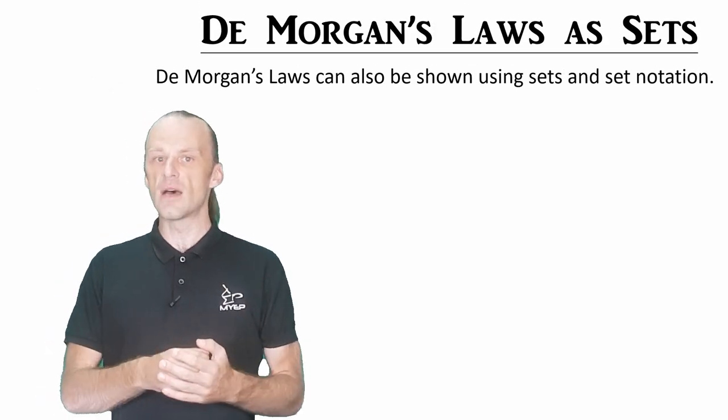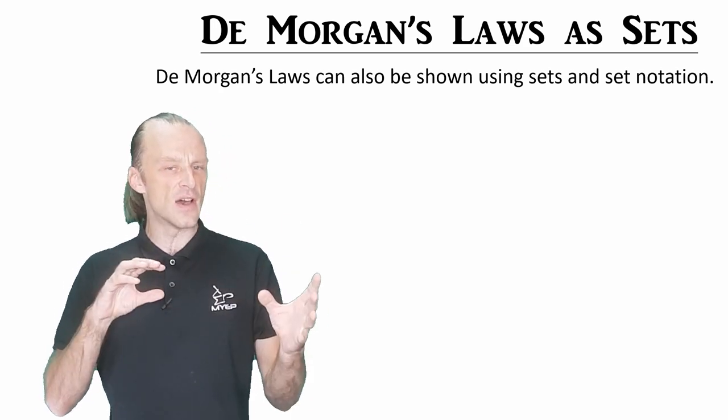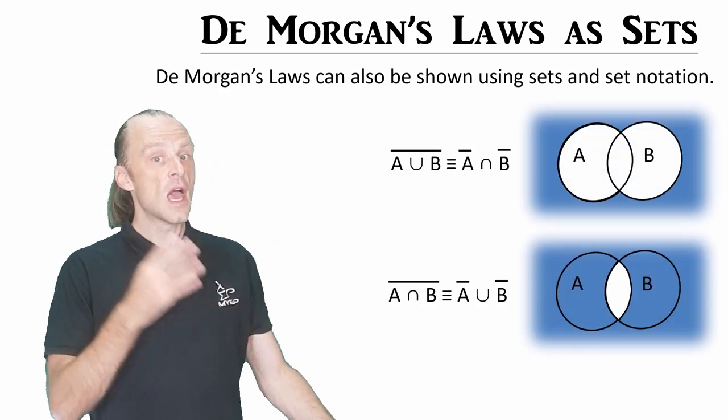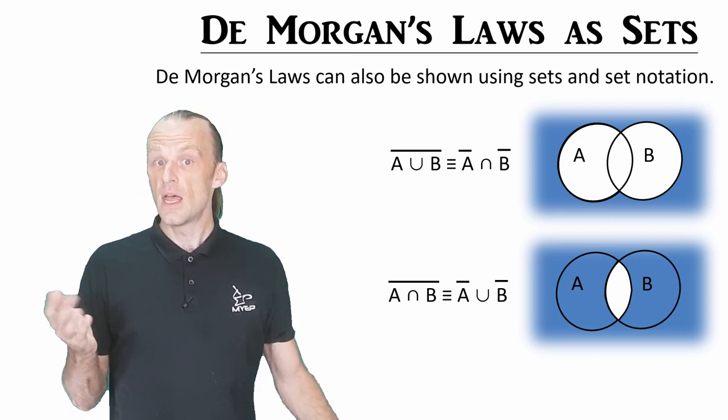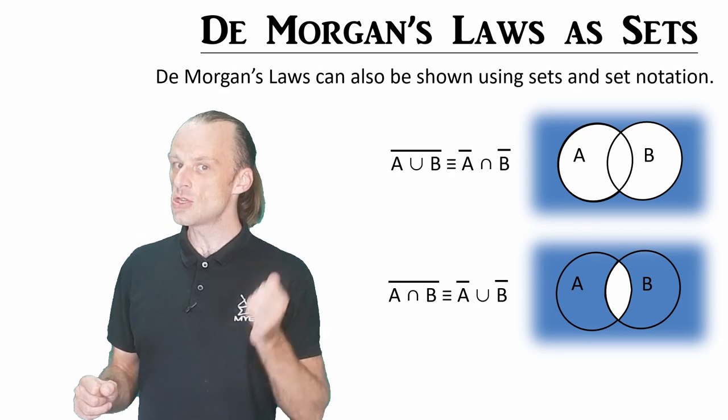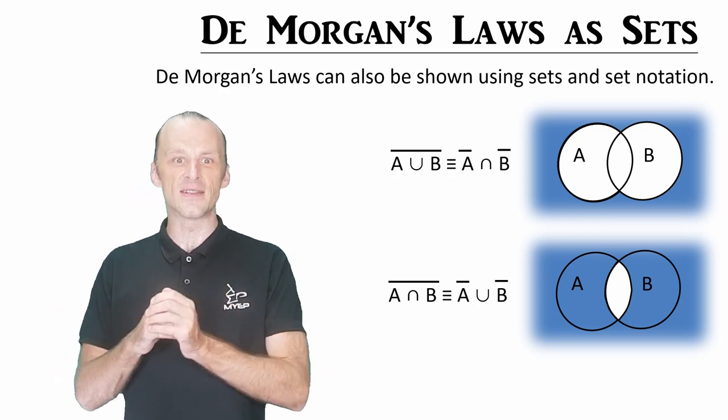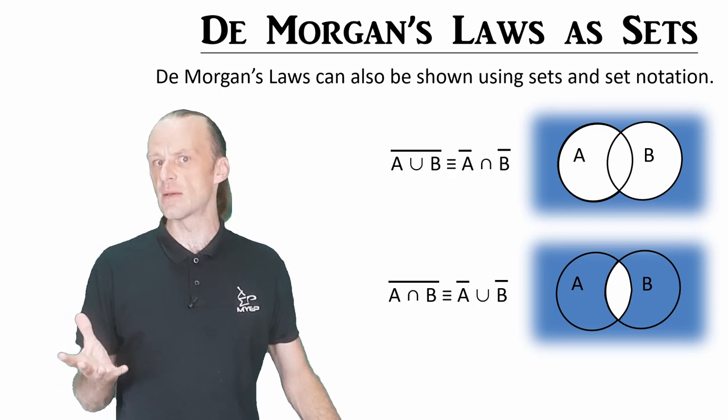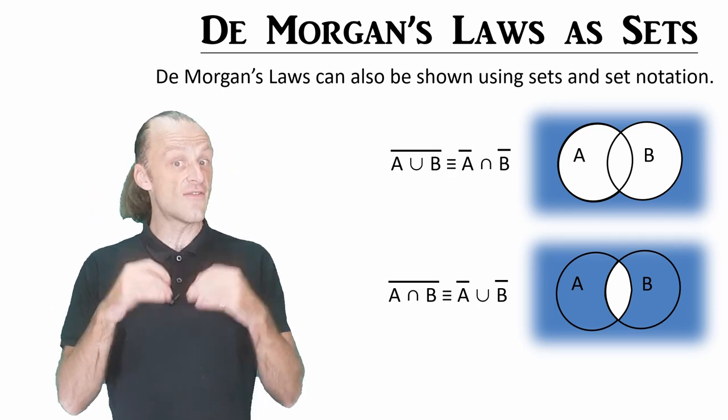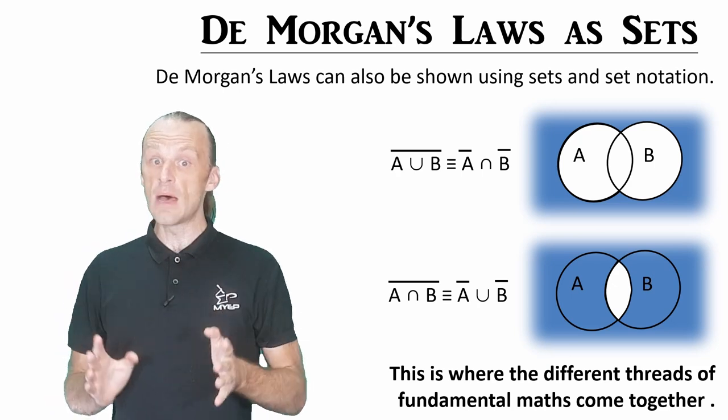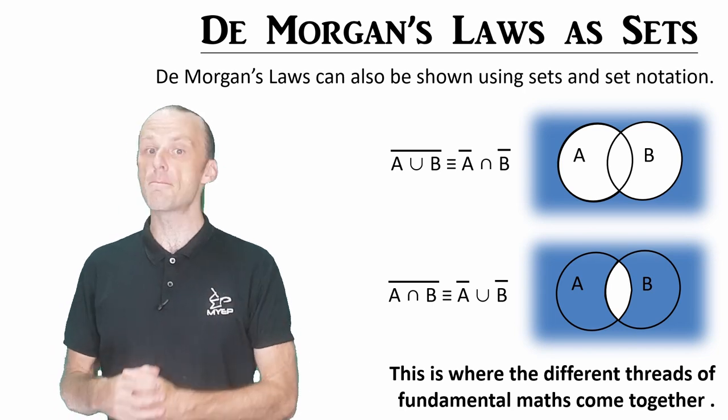De Morgan's laws can also be shown using sets and set notation. Sets are a different part of maths about groups of objects and whether things are a member of that group or not. These can be shown on Venn diagrams, with two sets like those on the right here. And the result of the laws is the area shaded in blue. The complement of a union is the same as the intersection of two complements, and the complement of an intersection is the same as the union of two complements. Don't worry if you don't know about sets. We have an old video, but you might recognize de Morgan's laws in the form of the sentence. We've just changed some of the vocabulary. Seeing these laws in very different ways shows that at the very root of the tree, all of mathematics starts to come together, and examples of extremely different forms can be based on the same mathematical principle.